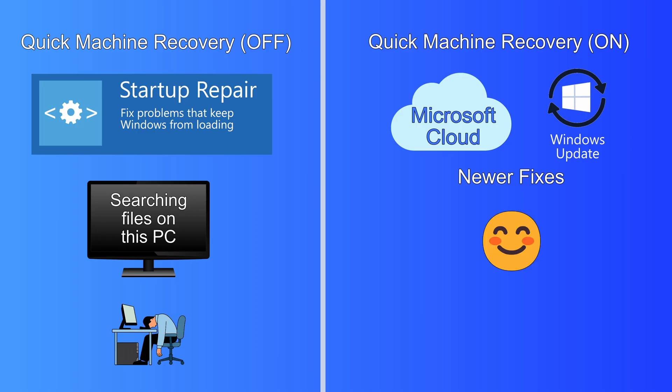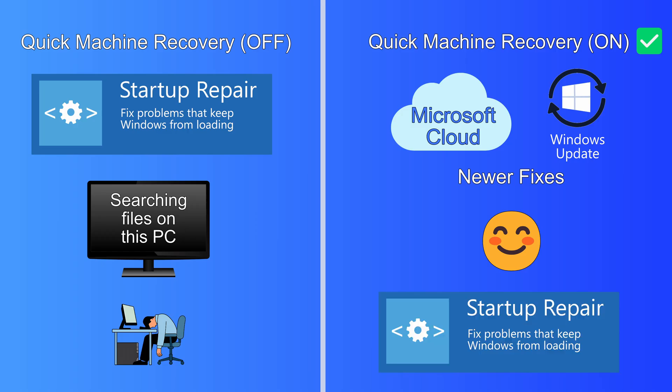So if your computer ever has trouble starting up Windows, then Quick Machine Recovery has a much better chance of fixing your computer automatically. If your computer cannot connect to the Microsoft Cloud for any reason, such as your computer not being connected to the internet, then it will fall back on Windows Startup Repair, which at least gives Windows a chance to fix the problem if you have no internet.